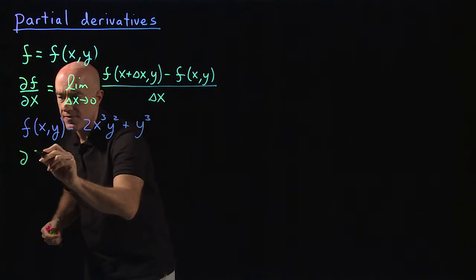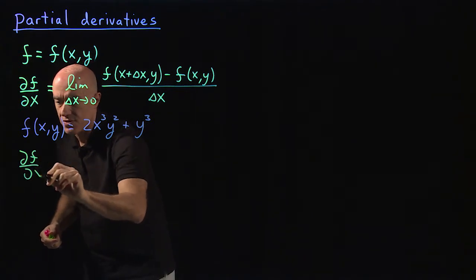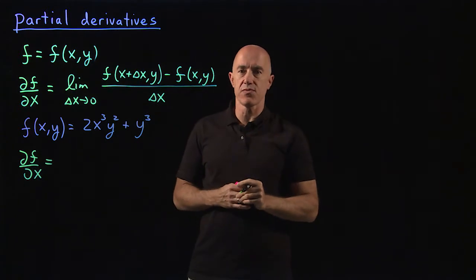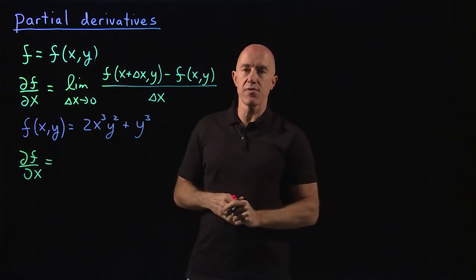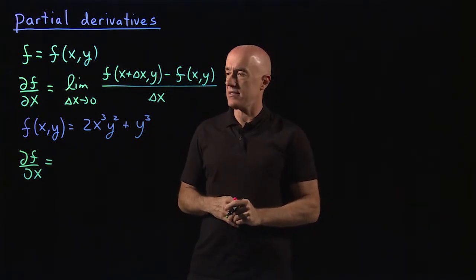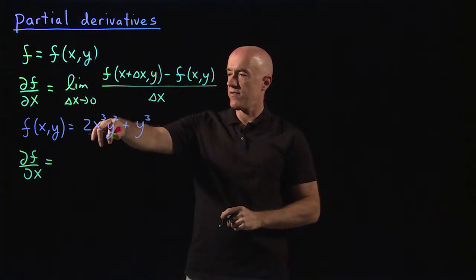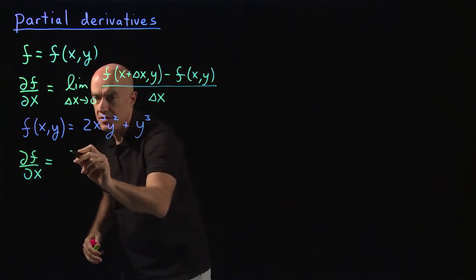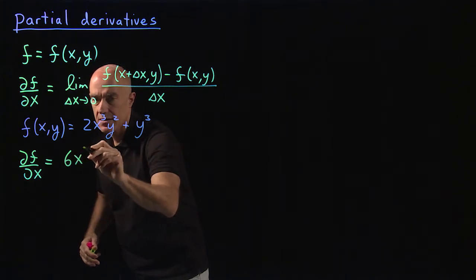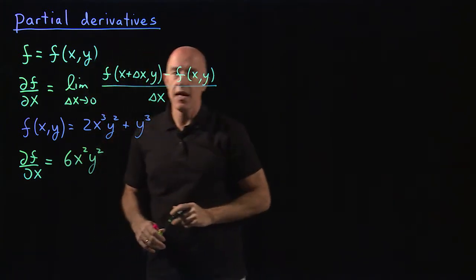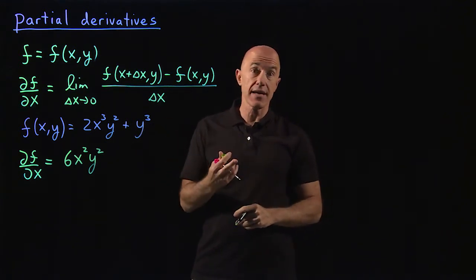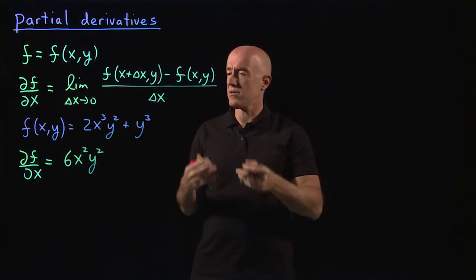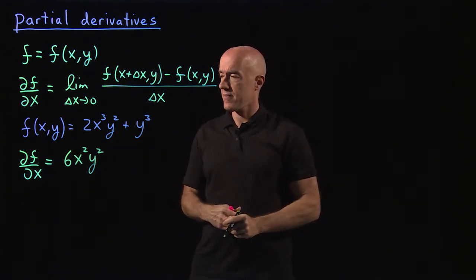The partial derivative of f with respect to x means we differentiate this expression taking the derivative with respect to x, treating y as a constant. The derivative of x cubed is 3x squared, times 2, so we get 6x squared y squared. And the derivative of y cubed with respect to x would be 0, since y looks like a constant.